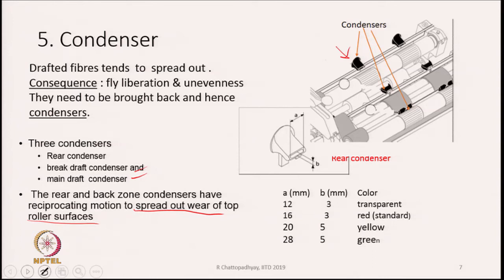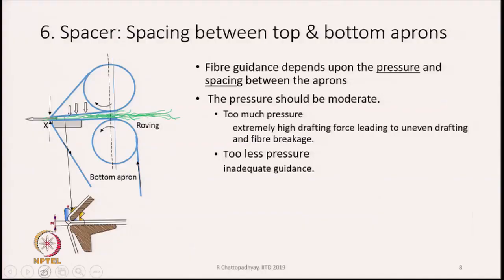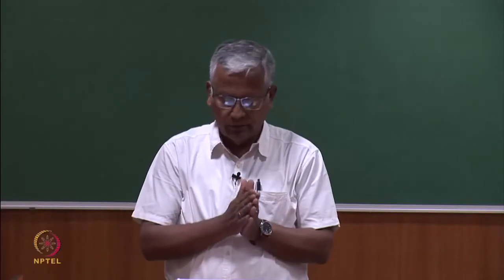A rear condenser diagram shows parts A and B with a rectangular shape, and A and B values are indicated. Condensers are available in different colors — transparent, red, yellow, green — as color identification marks, so depending on the count or material being processed, we choose a condenser of the right color.